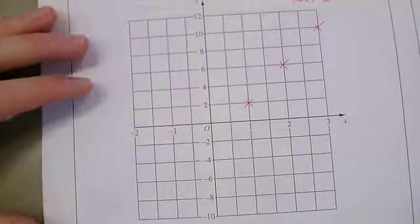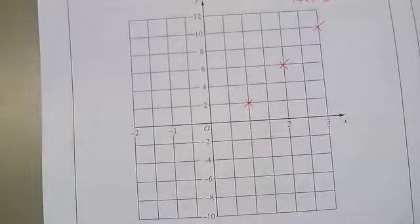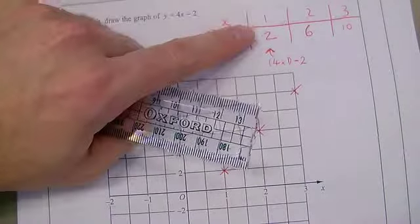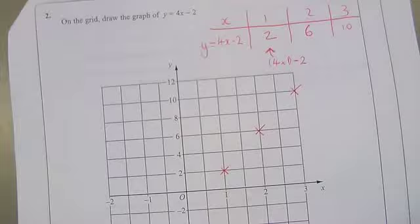What would happen if I couldn't have plotted one of those coordinates? I would have just gone and tried a different number up in my table. Say I couldn't have plotted three, ten - say it only went up to eight. I would have done zero or tried minus one, but it shouldn't really come into effect.